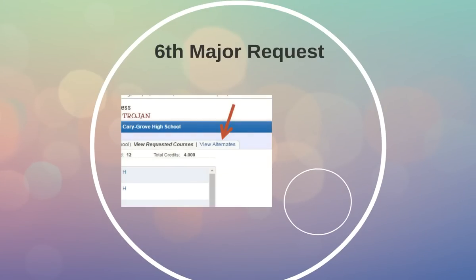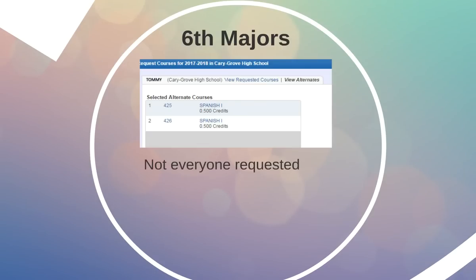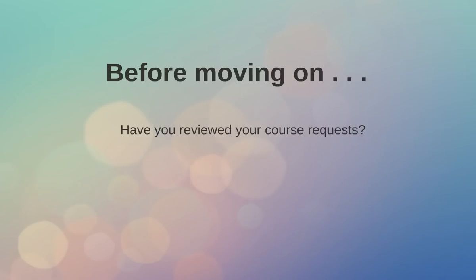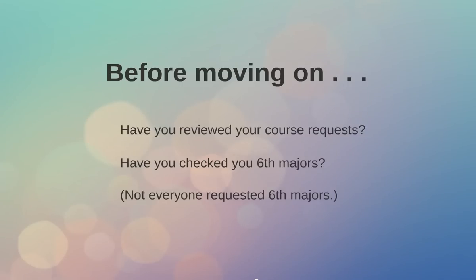Regarding six major requests, please select 'View Alternates' as indicated by the red arrow on your screen. When you select that, it will show you your six major requests. Not everyone has requested a six major, and that's okay. If you've selected a year-long course, make sure that one is indicated per semester. Note that six major requests are not guaranteed, and you will not see these on your schedule until you pick them up at August book distribution days. Before moving on, make sure that you have reviewed all of your course requests and your six majors.